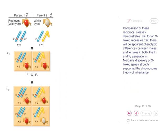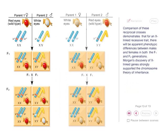Comparison of these reciprocal crosses demonstrates that for an X-linked recessive trait, there will be apparent phenotypic differences between males and females in both the F1 and F2 generations. Morgan's discovery of X-linked genes strongly supported the chromosome theory of inheritance.